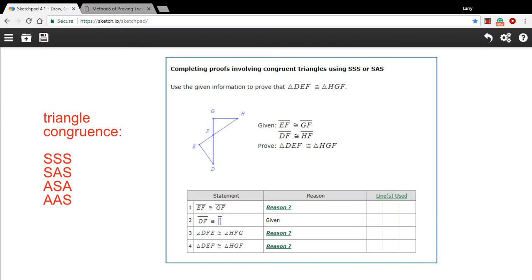In this problem, we've got a proof that's been partially constructed. There's one blank here in the statements, there are three reasons that we have to fill in, and any lines that we use.